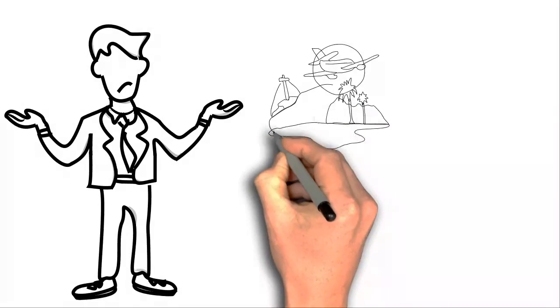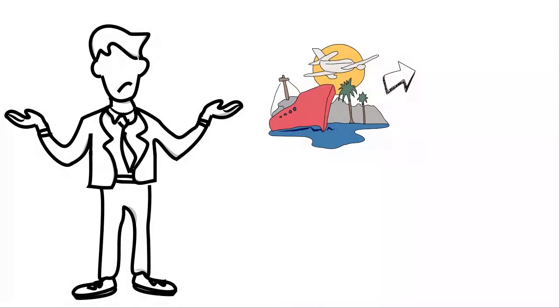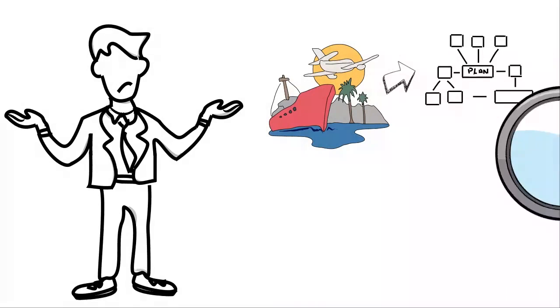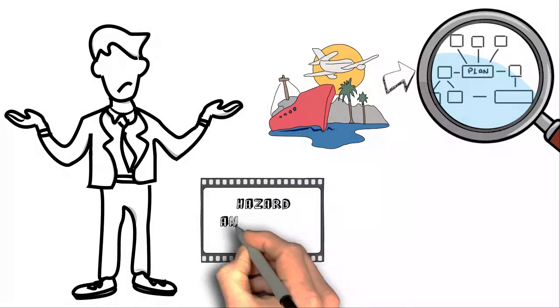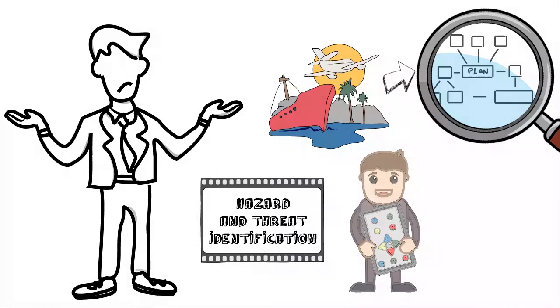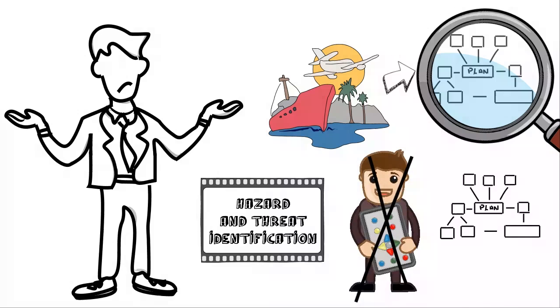It's simply not enough to identify the requirement for travel risk management process, which encompasses hazard identification and threat identification, then not be able to demonstrate that on an ongoing basis. Now this is also evolutionary...